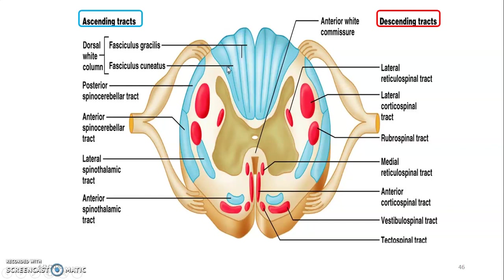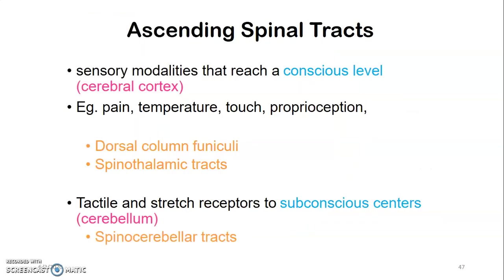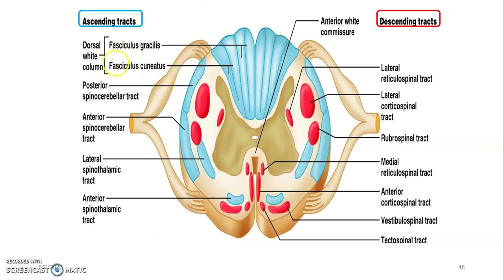In the lateral column, the ascending tracts are the posterior and anterior spinocerebellar tracts, which carry balance information from the spinal cord to the cerebellum. Also in the lateral column is the lateral spinothalamic tract, carrying pain and temperature from the spinal cord to the thalamus. In the ventral column is the anterior spinothalamic tract for crude touch. So the six ascending tracts to know are: fasciculus gracilis, fasciculus cuneatus, anterior and posterior spinocerebellar, and lateral and anterior spinothalamic.